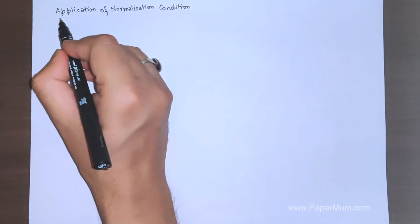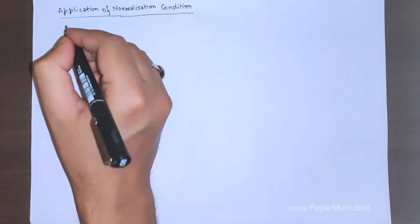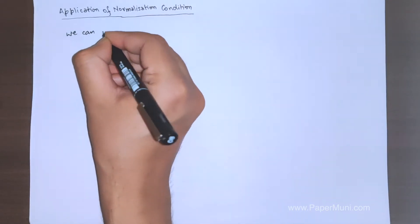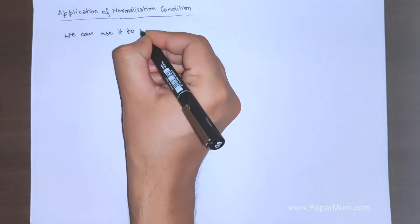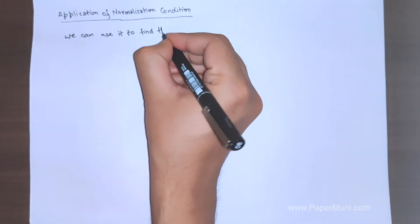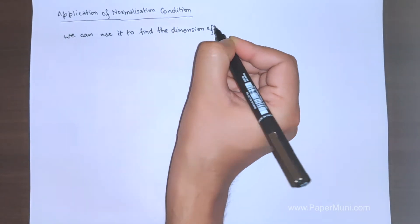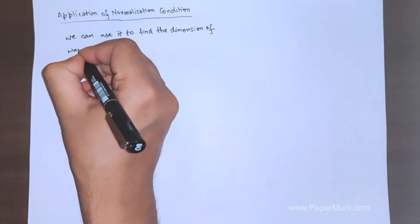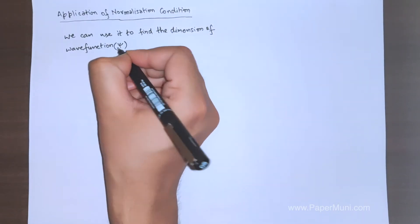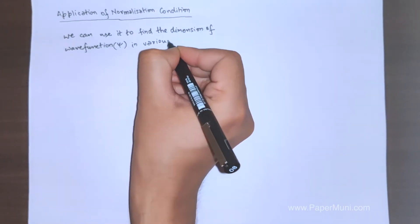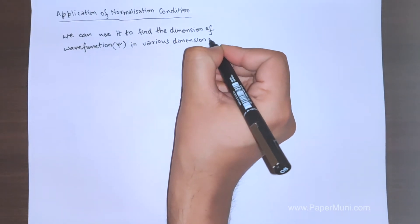We can use the normalization condition to find the dimensions of the wave function in various dimensional spaces — that is, one-dimensional, two-dimensional, and three-dimensional space.